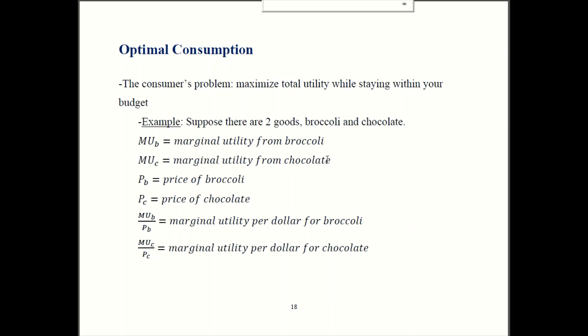So I'll call MUB the marginal utility you get from broccoli. So if I have one more piece of broccoli, how much extra happiness do I get? That's what this number is going to represent. MUC is going to be the marginal utility from chocolate, the extra happiness I get from another piece of chocolate. PB is going to be the price of broccoli, and PC is price of chocolate. Now, one very important figure is the ratio of marginal utility to the price. So MUB over PB is how much marginal utility, how much extra utility I receive if I spend one more dollar on broccoli. The analogous concept for chocolate is MUC over PC. The bonus utility I'm going to get when I spend a dollar on chocolate.